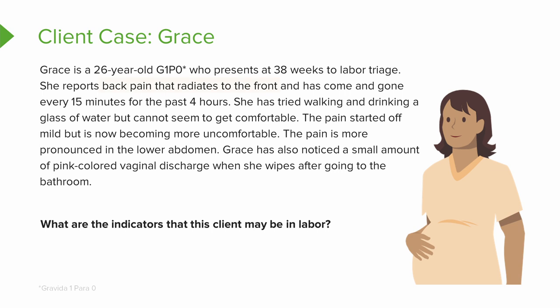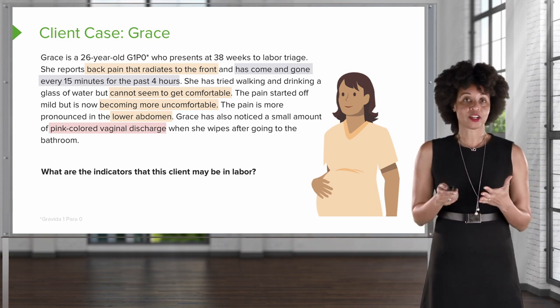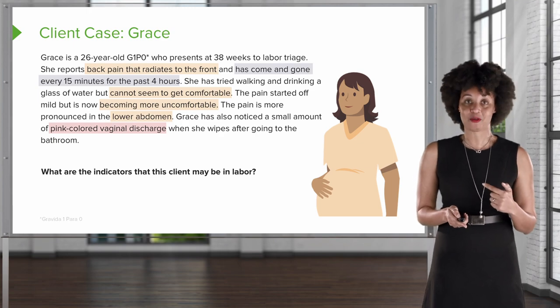Let's test what we know. Back pain that radiates to the front — check. Contractions every 15 minutes signal regularity — check. It's been going on for at least four hours — check. The patient tried walking and drinking water but can't get comfortable, implying contractions are getting stronger, definitely not less strong — check. Grace is becoming more uncomfortable with pain in the lower abdomen, and there is pink discharge when wiping. These are all indications that Grace is in labor and it may be time to make her way to the hospital.